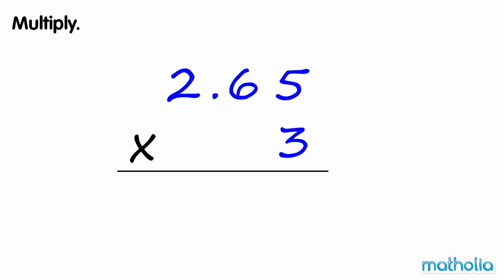Multiply. We need to multiply 2.65 by 3. Start by multiplying the hundredths. 3 times 5 hundredths equals 15 hundredths. Regroup 15 hundredths into 5 hundredths and 1 tenth.